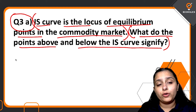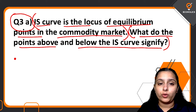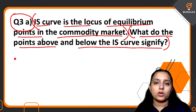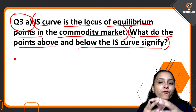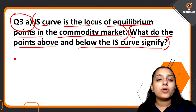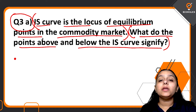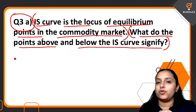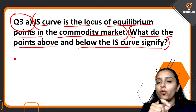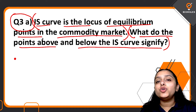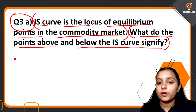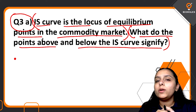Even though they have told you that the IS curve is the locus — the schedule we get from equilibrium points of the commodity market — you should still address it in the introduction. Three to four, or four to five lines should be allotted to introducing the IS curve.